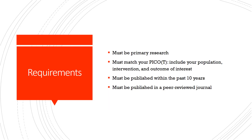Some basic guidelines for finding articles to back up your PICO question are listed here — these are some of the key requirements for articles. Just remember to always review your assignment guidelines, but I've listed some of the sticking points where a lot of students have struggled in the past. First, it must be a primary research article. The article must match your PICO question and include your population, intervention, and outcome of interest. The article must be published within the last 10 years and it must be published in a peer-reviewed journal.